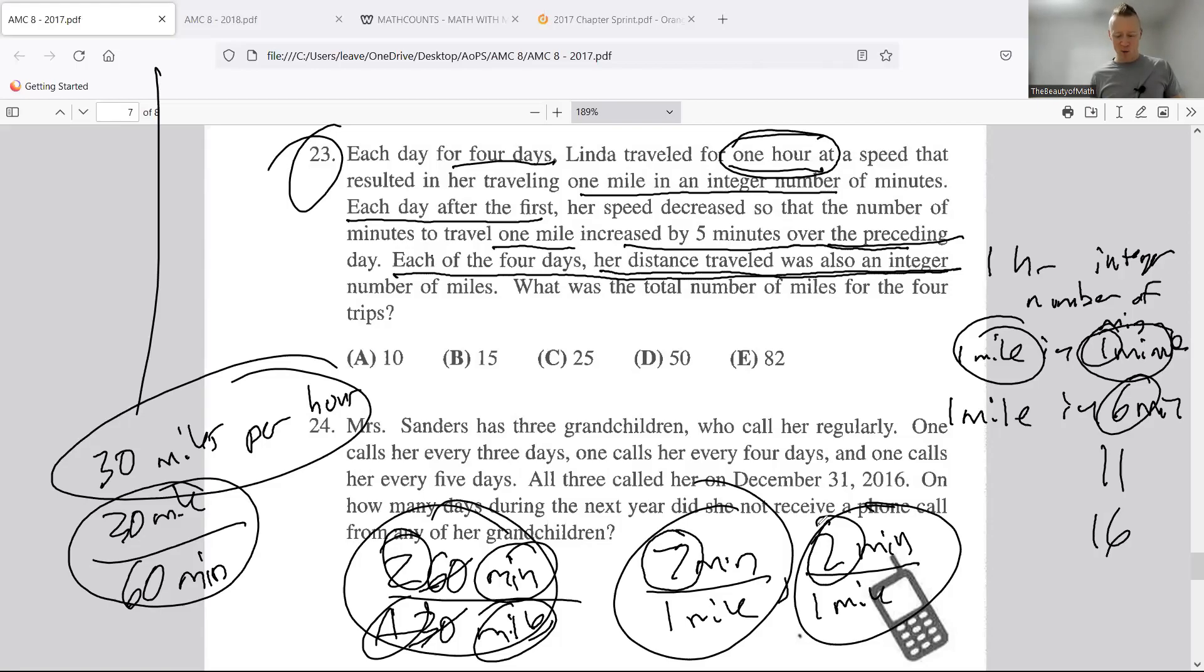Seven does not multiply by anything to give us sixty, and since it doesn't, she would not go an integer number of miles because she traveled for sixty minutes. So it could not have been two and seven, could it? No.